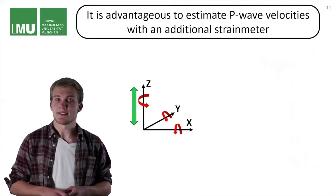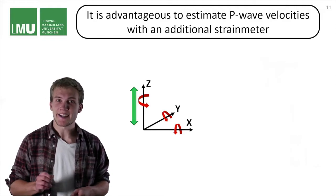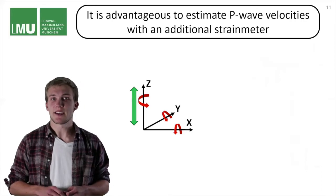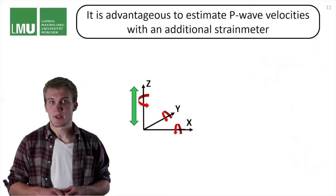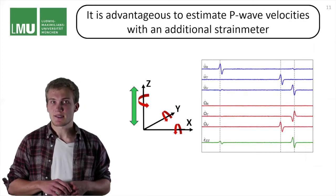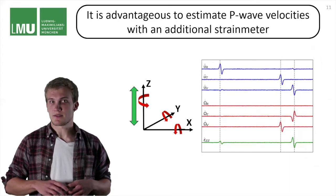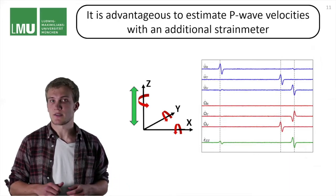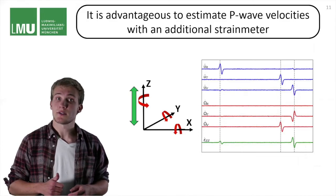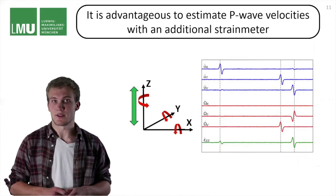So now let's upgrade our six component receiver to a seven component receiver with a vertical strain meter. We can do the elastic tensor inversion scheme just as we have done it before. So we use the rotations to estimate the propagation direction, and we also use rotations to estimate the S wave velocities.